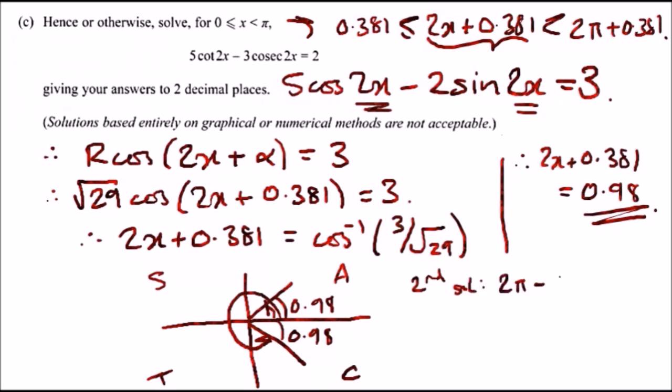To find the value of x, all we have to do now is just solve this equation. This tells you that the two solutions are 0.98 and 2 pi minus 0.98, which equals to this equation here. All we have to do now is subtract 0.381 from both of these and divide it by two.